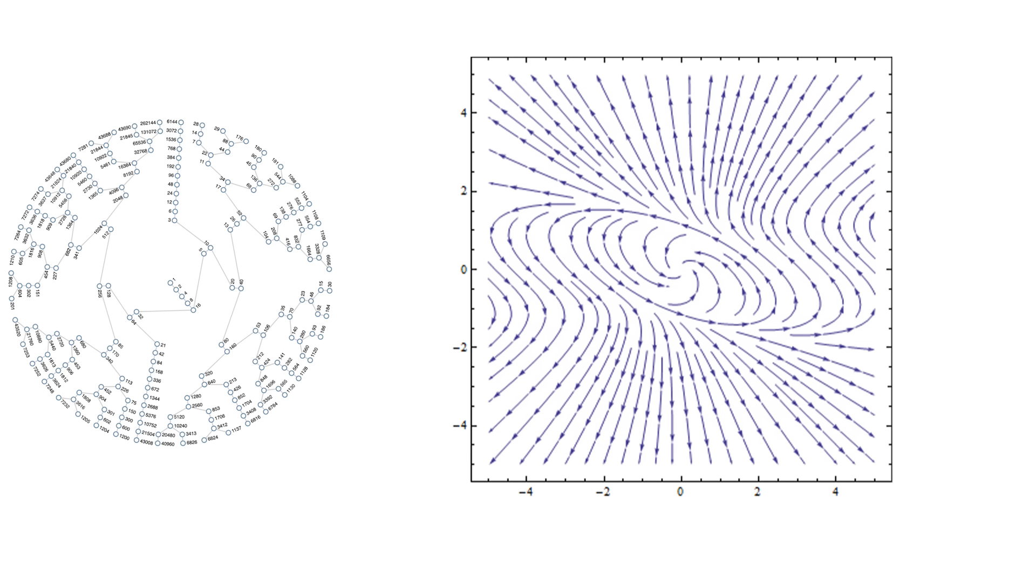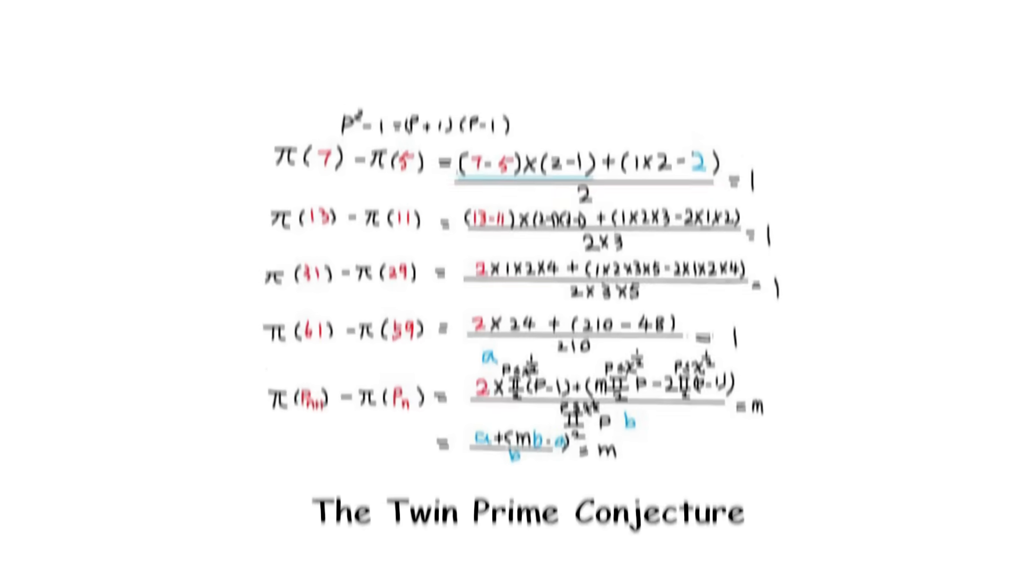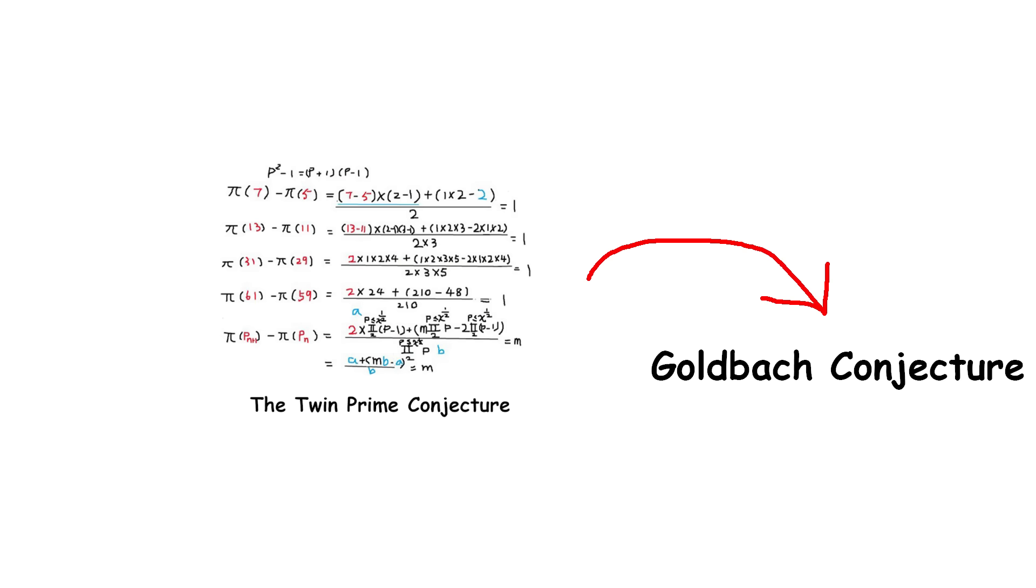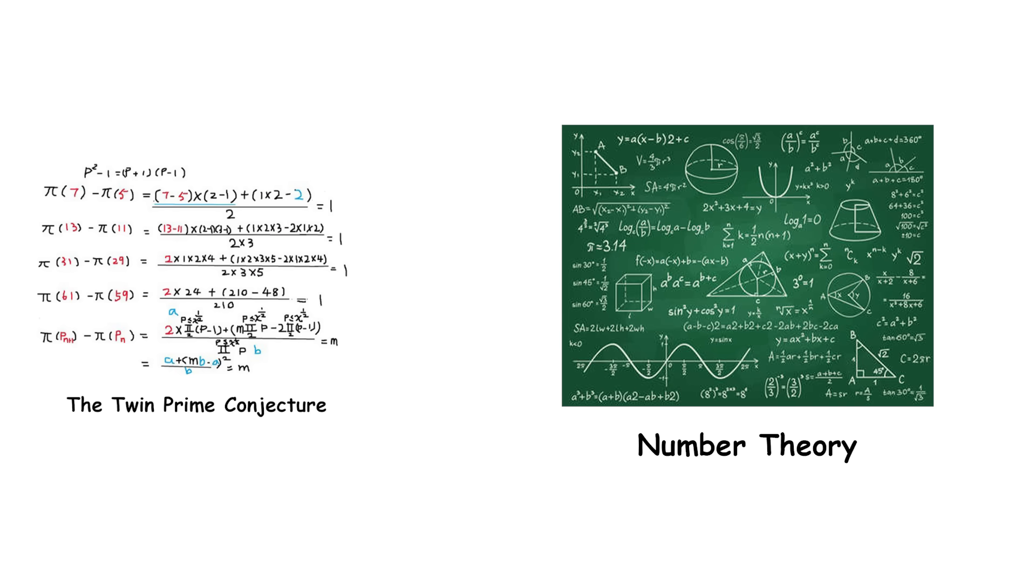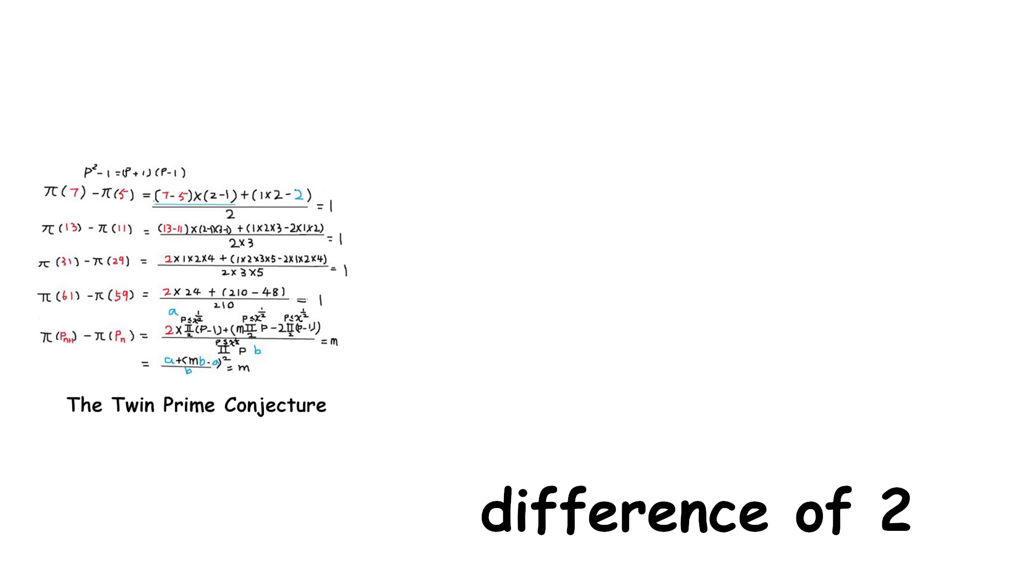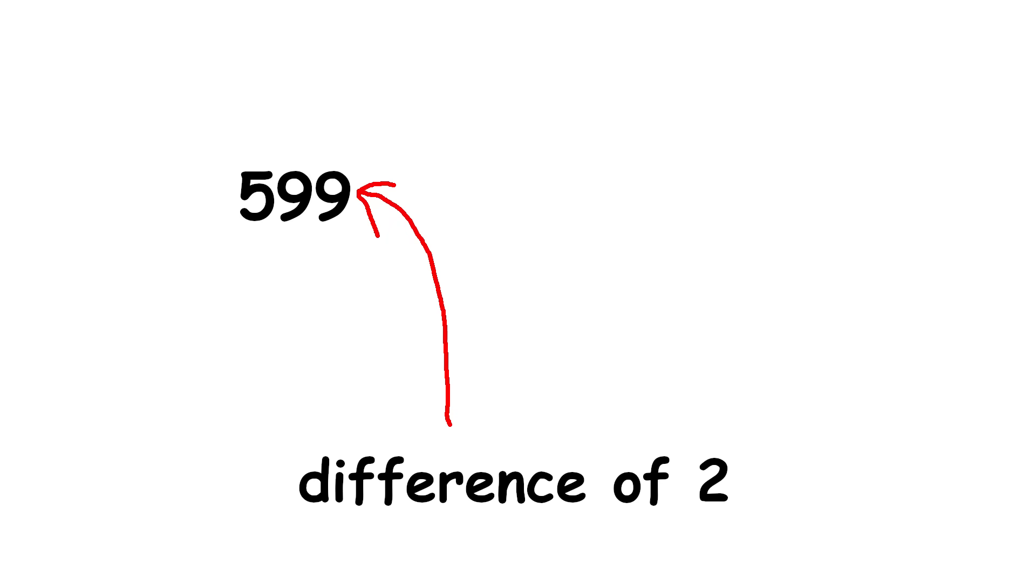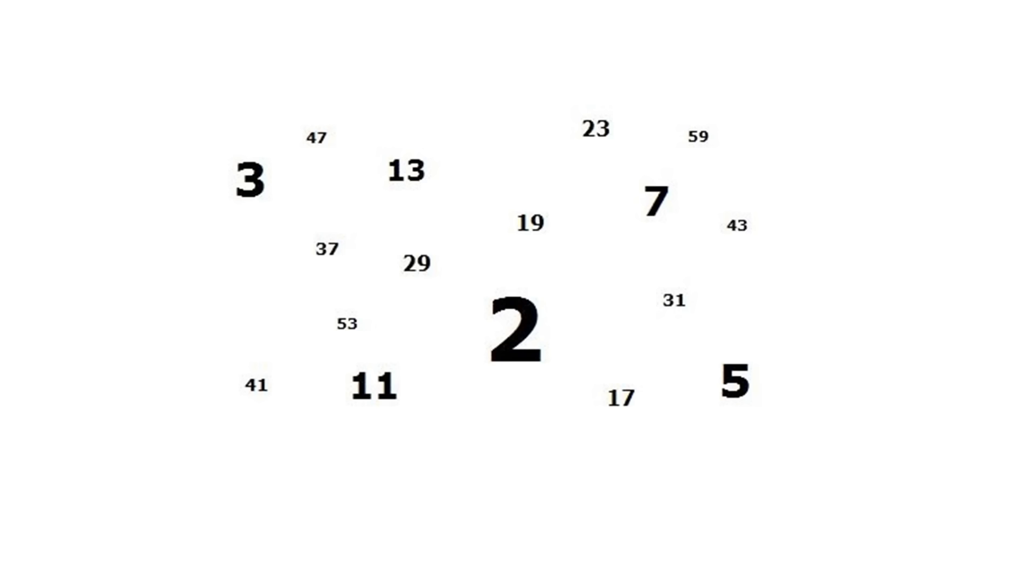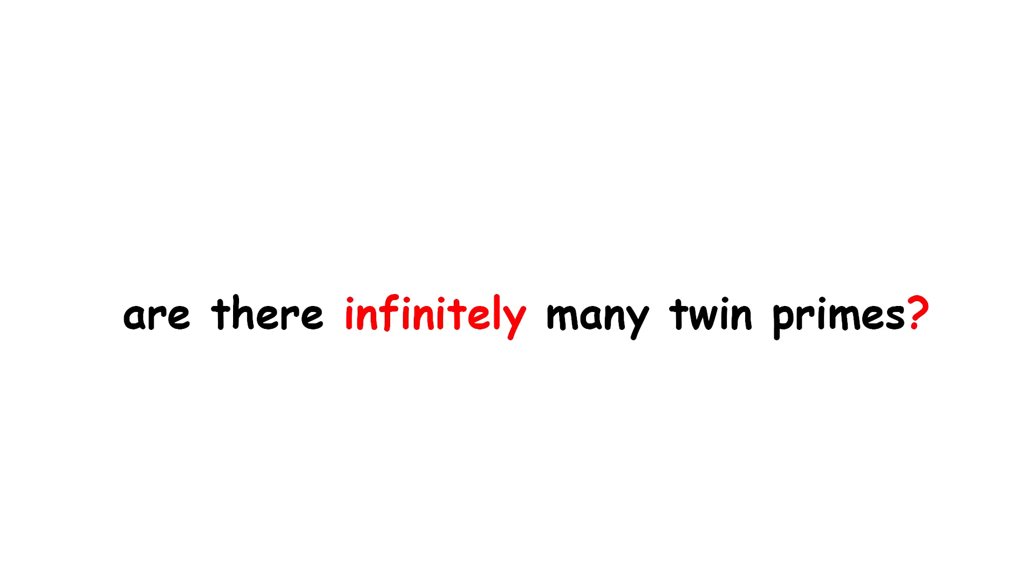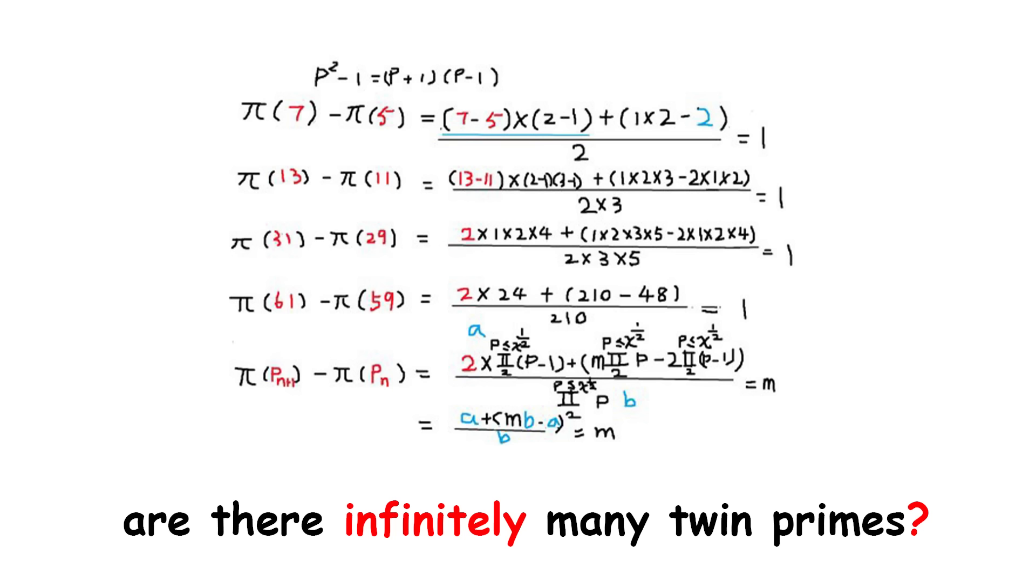The twin prime conjecture. Together with Goldbach, the twin prime conjecture is the most famous in number theory, or the study of natural numbers and their properties, frequently involving prime numbers. Since you've known these numbers since grade school, stating the conjectures is easy. When two primes have a difference of two, they're called twin primes. So 11 and 13 are twin primes, as are 599 and 601. Now, it's a day one number theory fact that there are infinitely many prime numbers. So, are there infinitely many twin primes? The twin prime conjecture says yes.